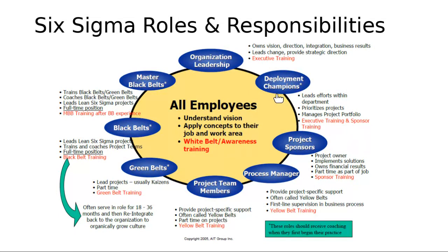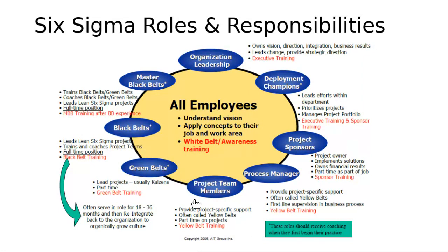The project sponsor can be the dean or vice dean. The champions can be the deanship for quality in the university. Project team members work in the team — they could be from outside the organization working part time. They gather information, analyze it, and suggest improvements, but they should work hand-in-hand with people inside the organization to understand the process. These people need yellow belt training.